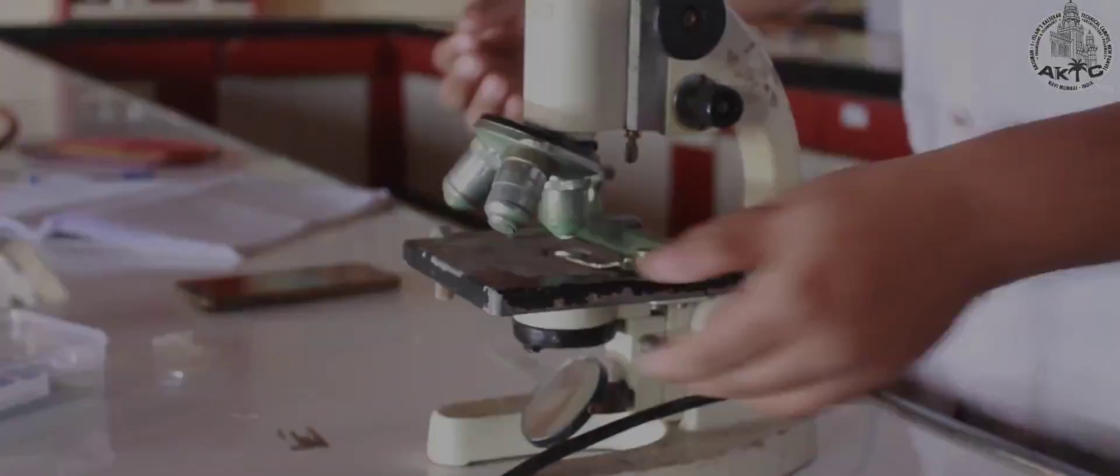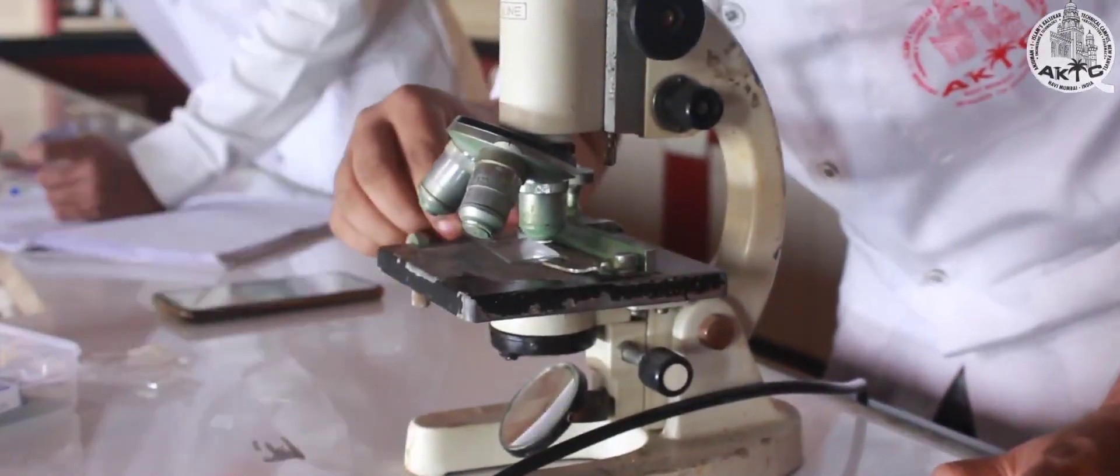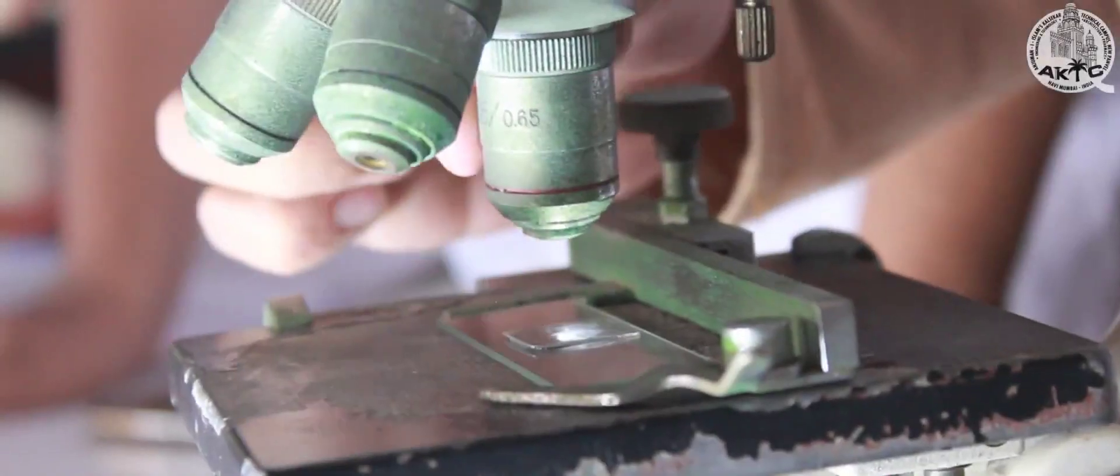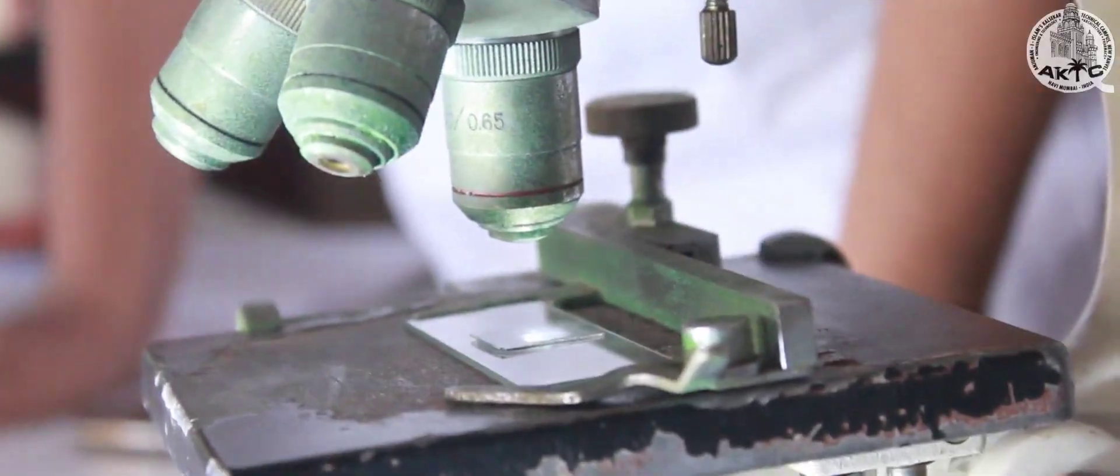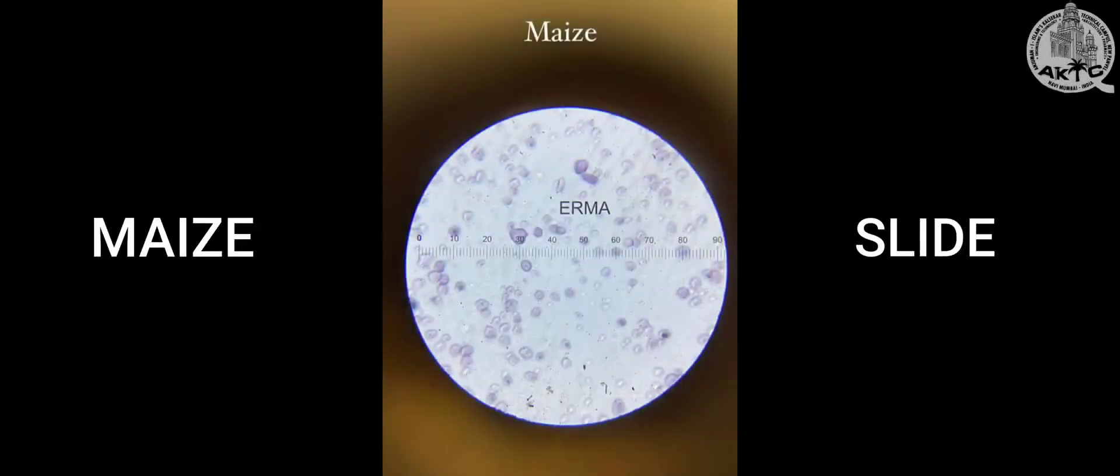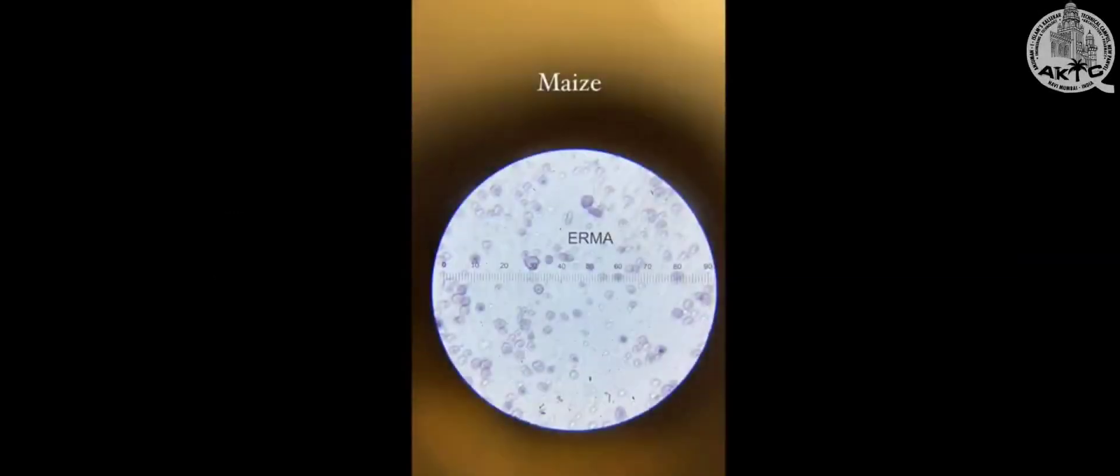Observe under microscope using 10x objective and then later adjust it to 45x. Let's begin with the calculation. This is a slide of maize. Now first we have to check for starch grain and calculate according to its shape.